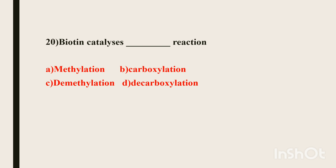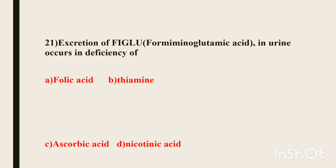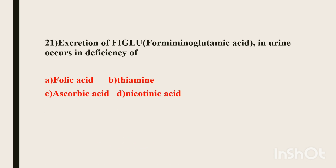Twenty-first question. Excretion of FIGLU (formiminoglutamic acid) in urine occurs in deficiency of — Options: folic acid, thymine, ascorbic acid, nicotinic acid. The answer is folic acid deficiency (vitamin B9). In folic acid deficiency, formiminoglutamic acid cannot be converted to glutamic acid, so it accumulates and is excreted in urine.